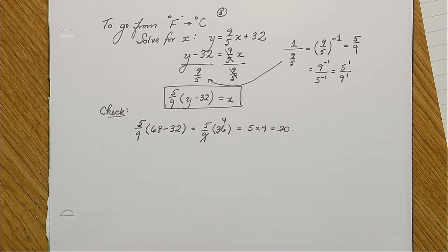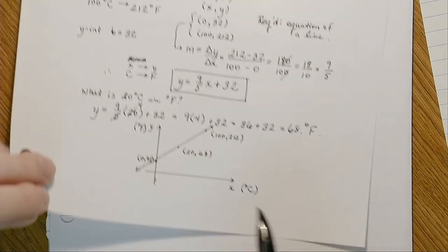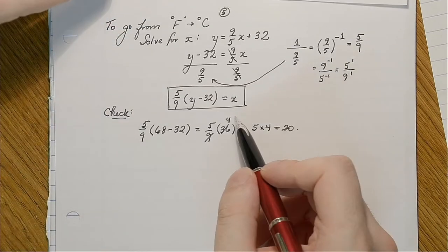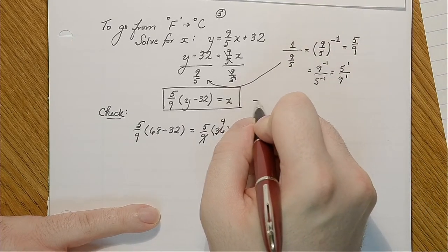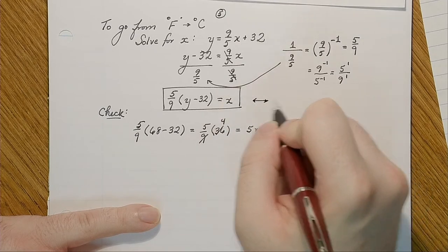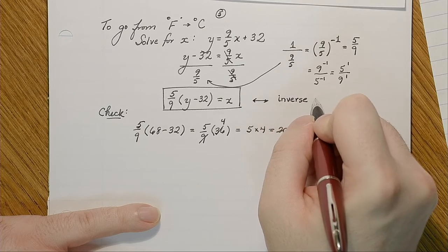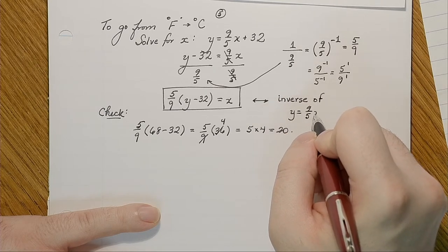If this was our original line — the equation y = (9/5)x + 32 — what we've actually done by solving for x is found the inverse function: x = (5/9)(y − 32).